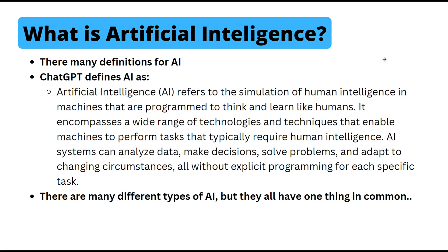So to start, there are many different definitions for AI. I figured if we're trying to answer a question about artificial intelligence, we might as well ask ChatGPT. So ChatGPT defines AI as: artificial intelligence refers to the simulation of human intelligence in machines that are programmed to think and learn like humans. It encompasses a wide range of technologies and techniques that enable machines to perform tasks that typically require human intelligence. AI systems can analyze data, make decisions, solve problems, and adapt to changing circumstances, all without explicit programming for each specific task.